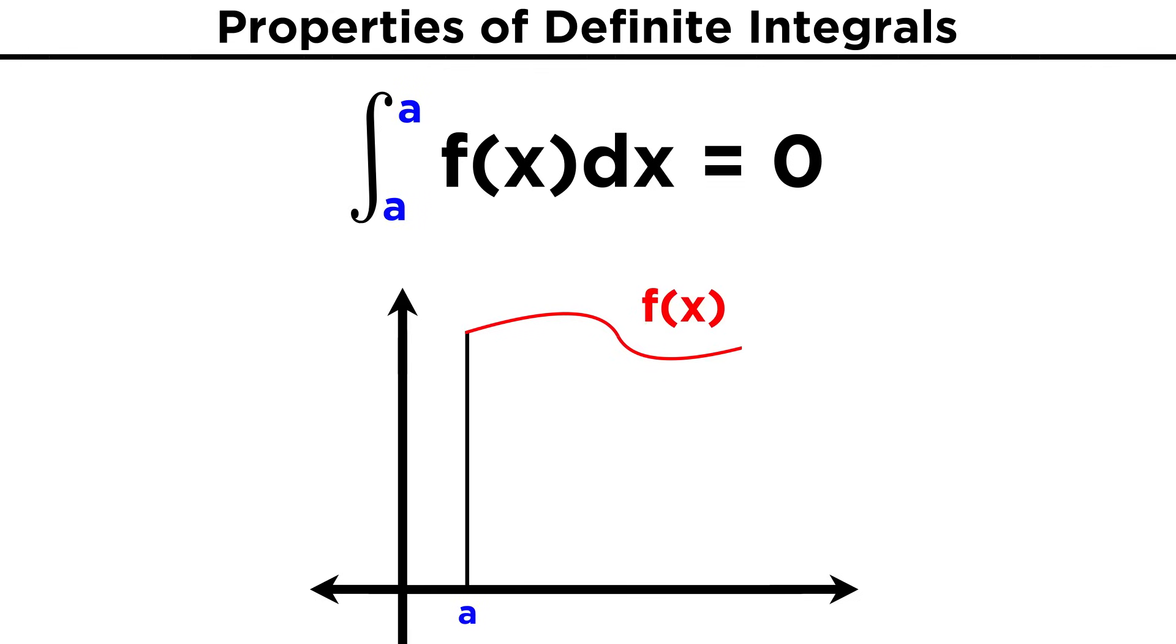Next, if both of the limits of integration are the same number, the integral will be equal to zero, no matter what the function is. This is because we are essentially asking about the area under a single point, which would be like finding the area of one infinitely thin rectangle, which is just a line. A line has no area, so this integral equals zero.